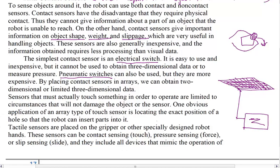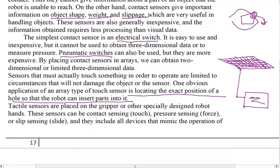Now this application that they are talking about—the sensor is locating the exact position of the hole so that the robot can insert part into it. This is a somewhat old application; nowadays it is done completely with the help of camera. Now tactile sensors are placed on the gripper. What is the meaning of gripper? I have already told—it is the end effector of the robot, the part that grips the object. That is the gripper. So tactile sensors—what is the meaning of tactile sensors? Tactile sensors means sensors that sense the touch.